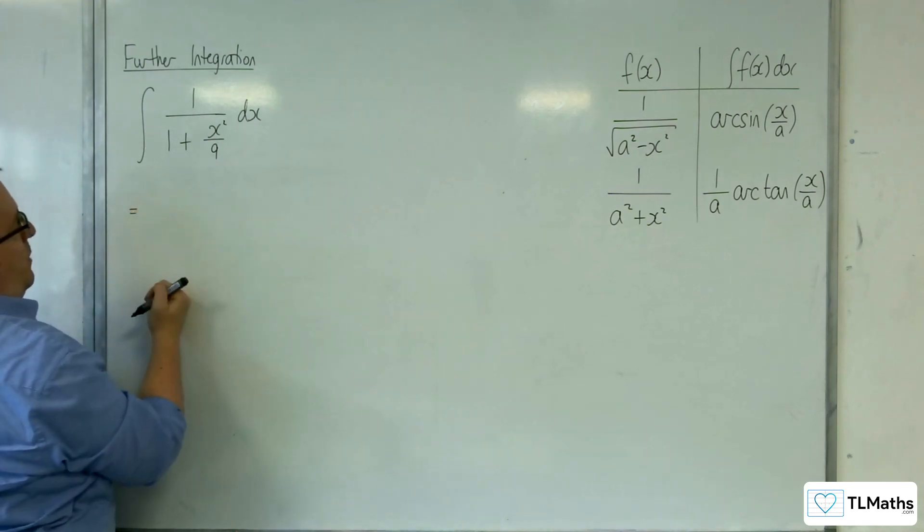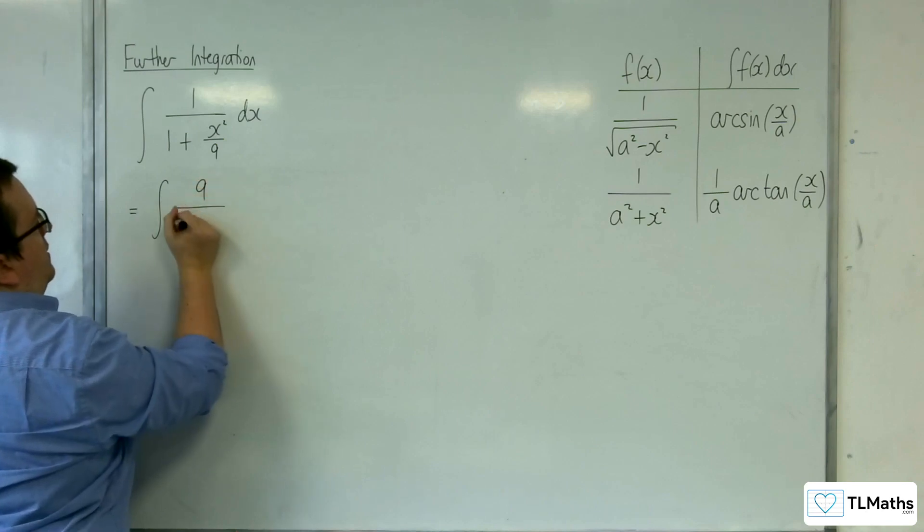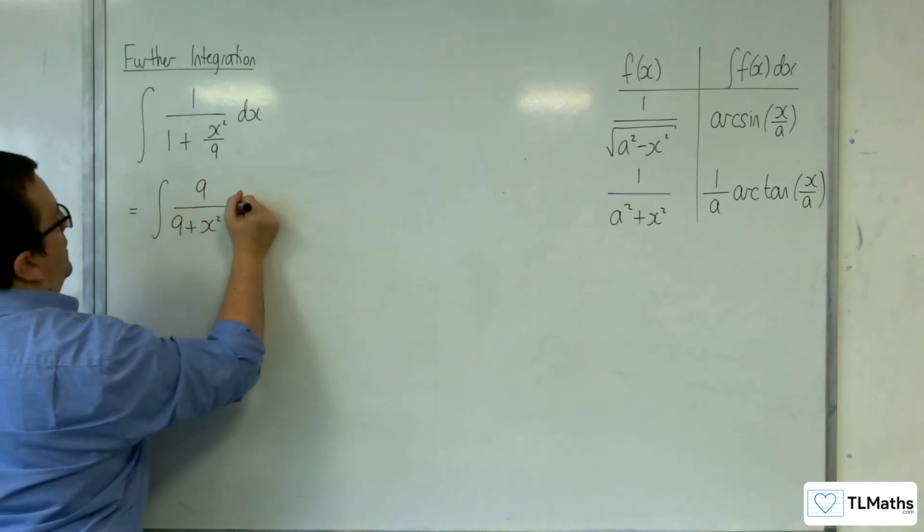What I'm going to do is multiply top and bottom by 9. We'll have the integral of 9 over 9 plus x squared dx.